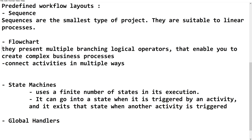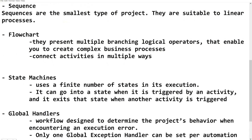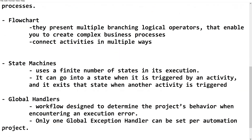Global Exception Handlers are workflows designed specifically to determine the project's behavior when an execution error is encountered. When the automation encounters an execution error that has not been handled by a Try-Catch or Throw, the Global Exception Handler comes into picture. There is only one Global Exception Handler allowed per project — one per automation.